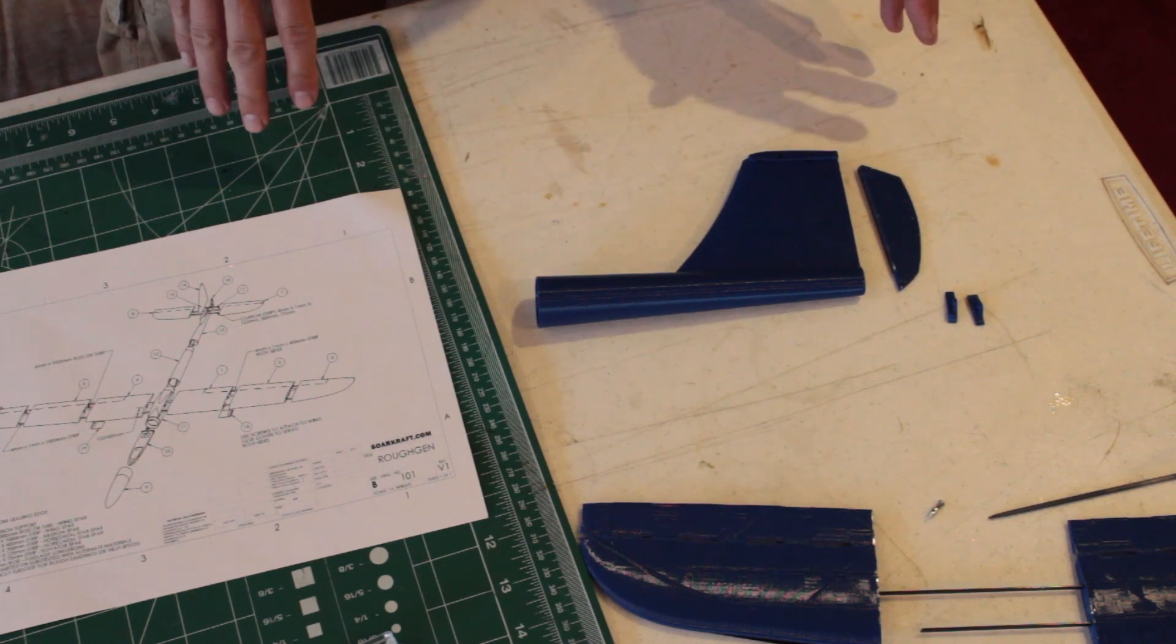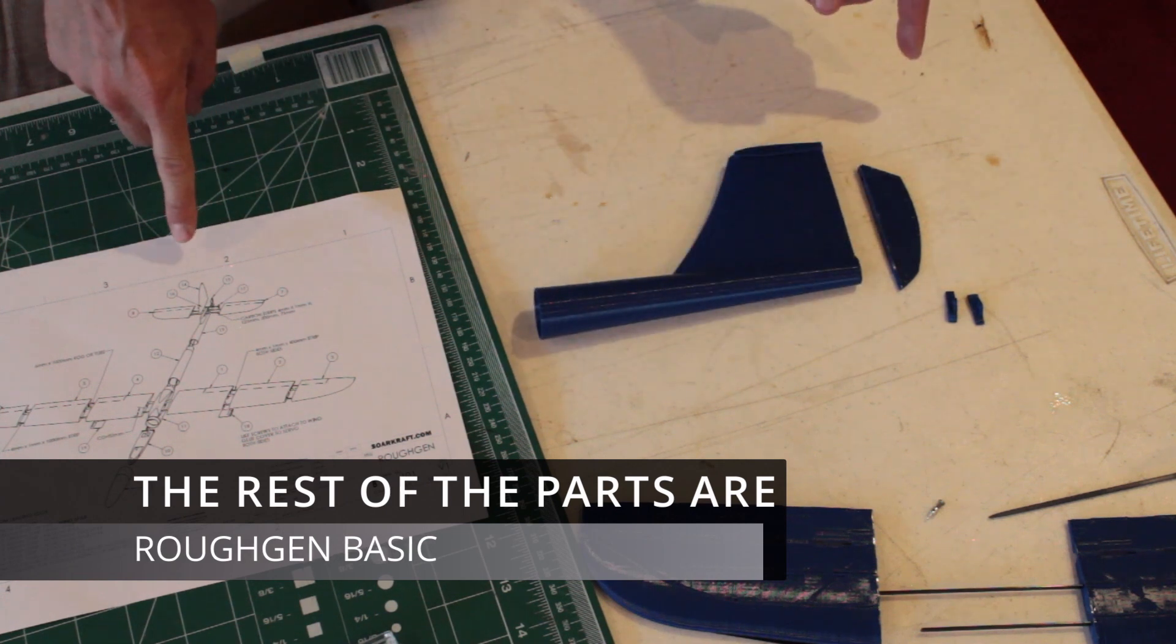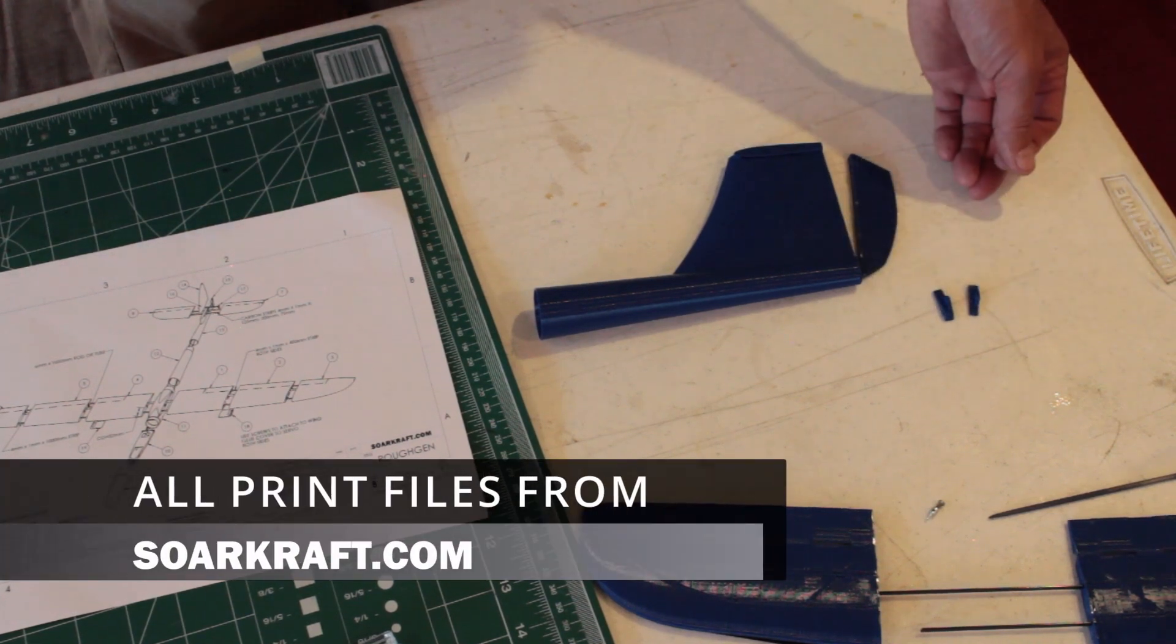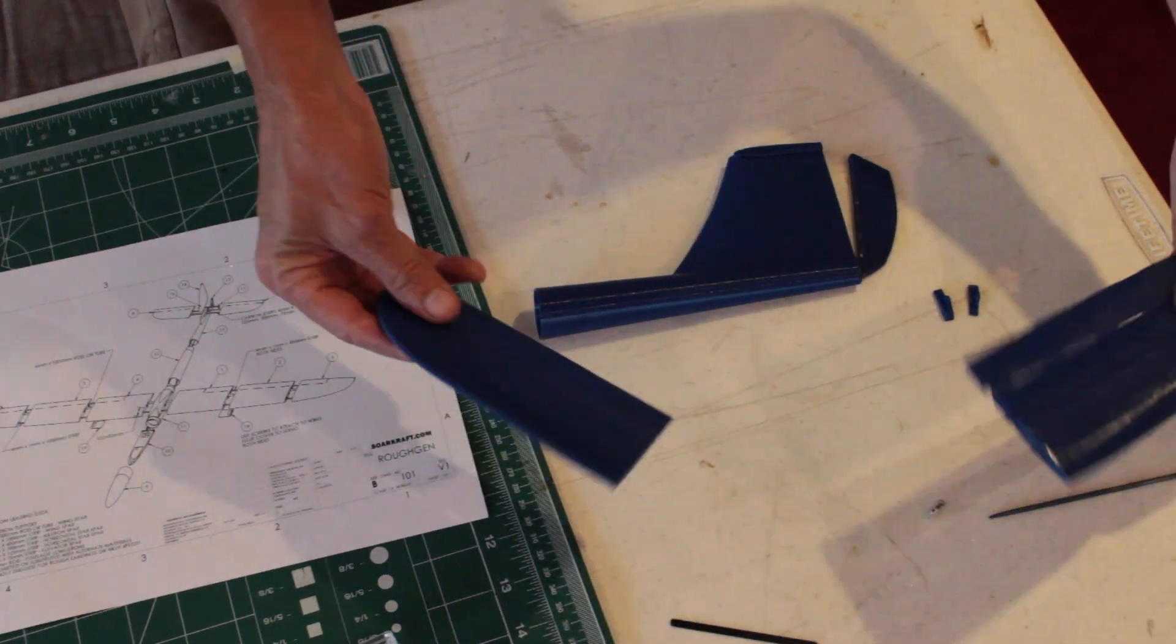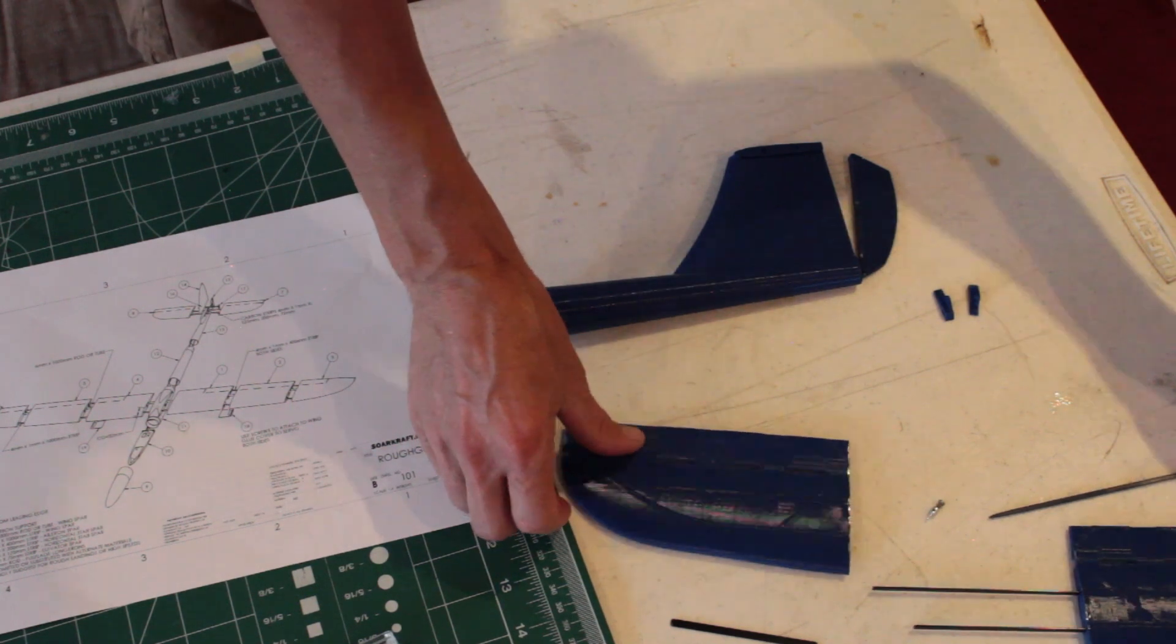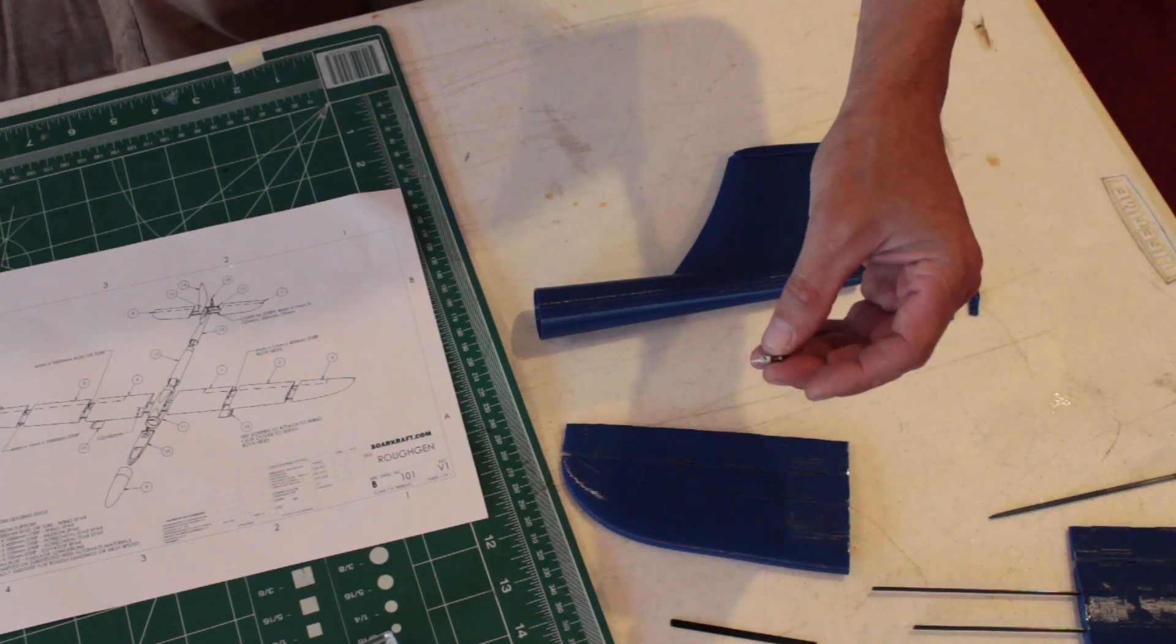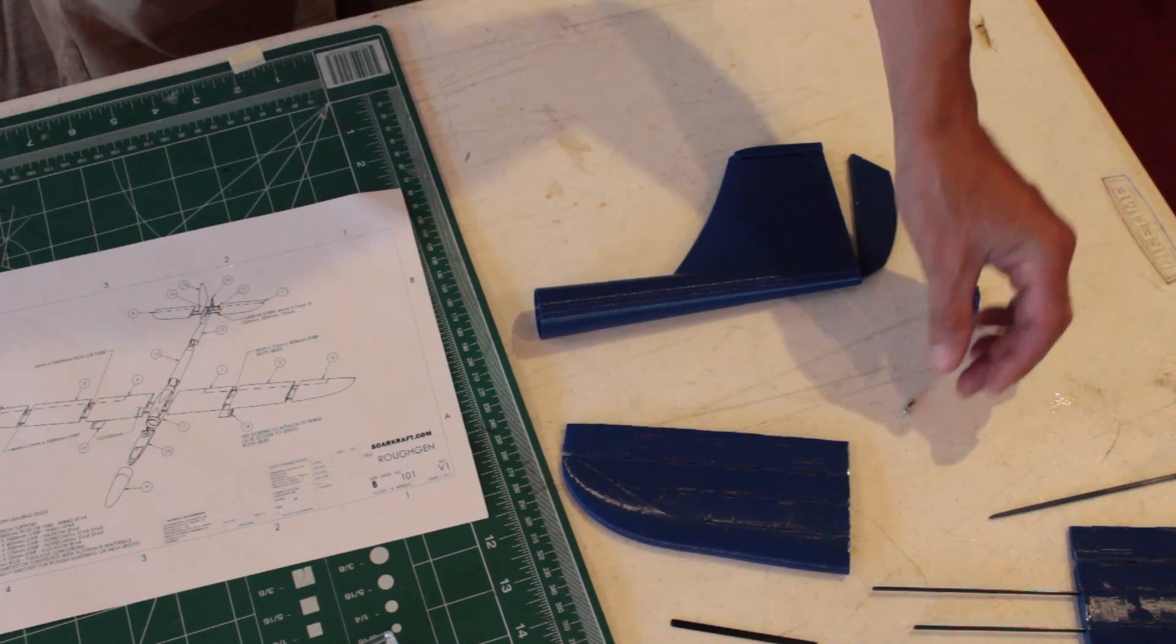These are the four parts that are different with the detail option. This is the tail section that replaces number 13, this replaces number 14, these are the two control horns that replace 16 and 17. It uses the same horizontal stabilizer, the same length carbon supports, and I have it set up to use the same easy Dubro connector.